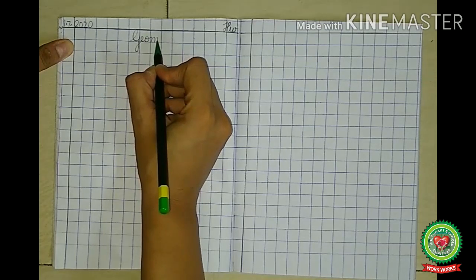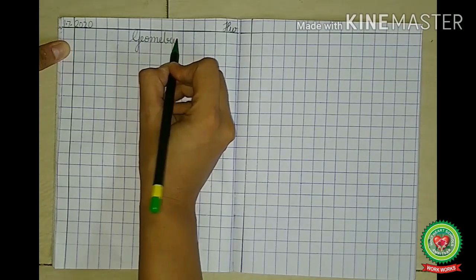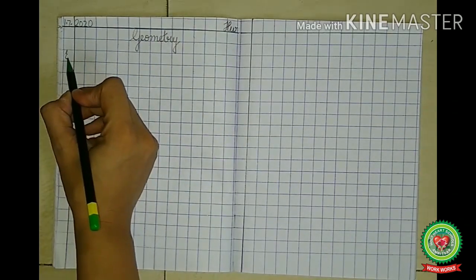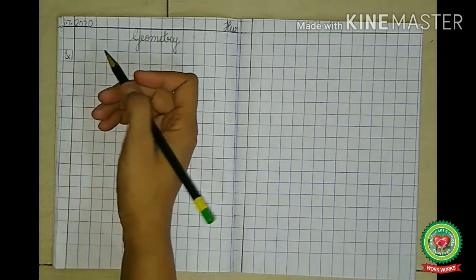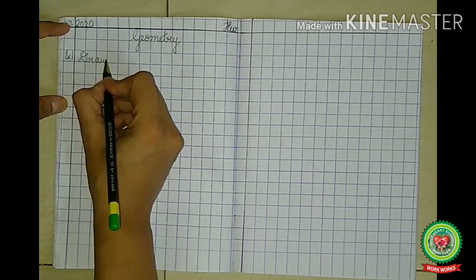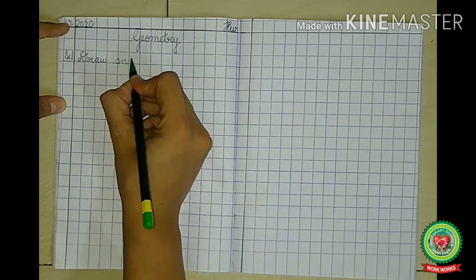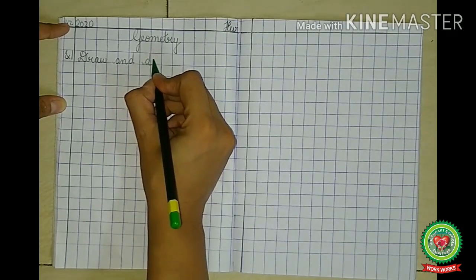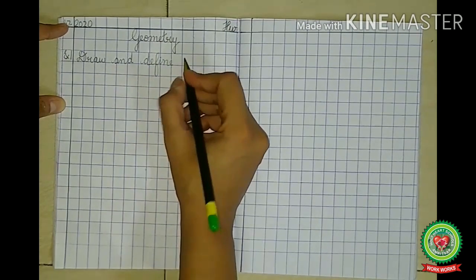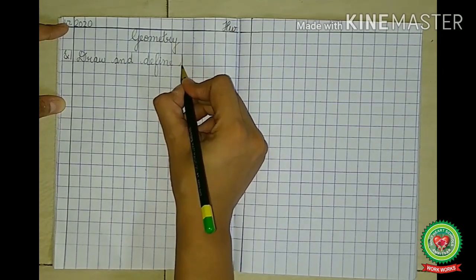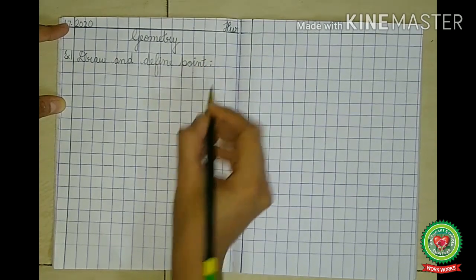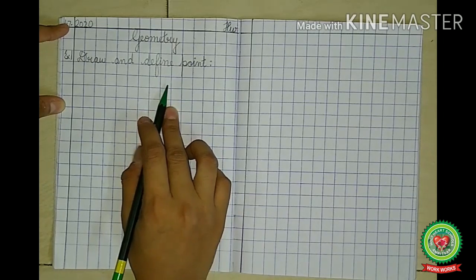In the first line, you will write 'Geometry'. Now leave a line. Put exercise 1 before the margin. Write down: Draw and define. Point.